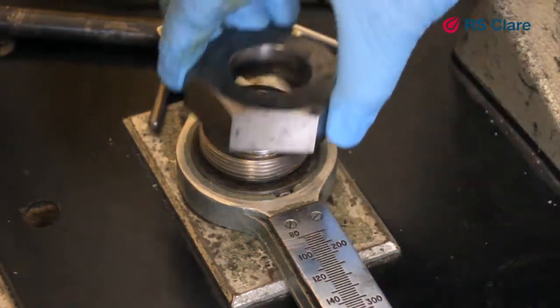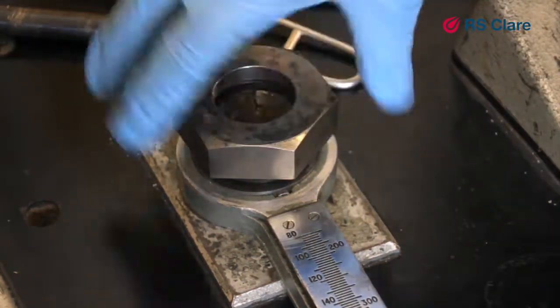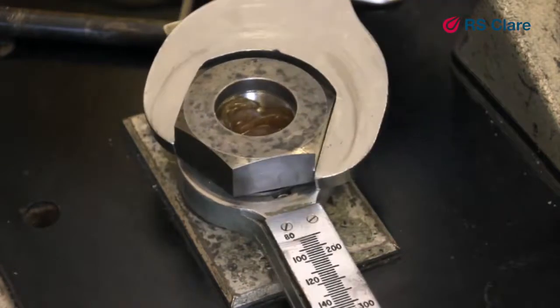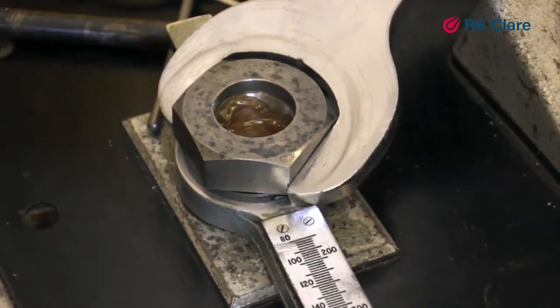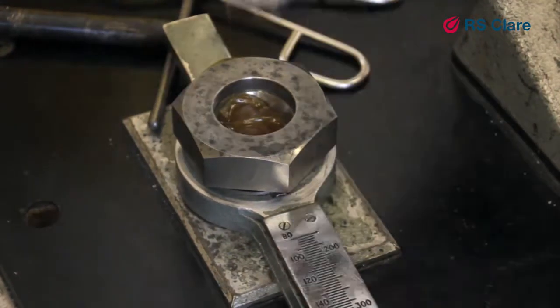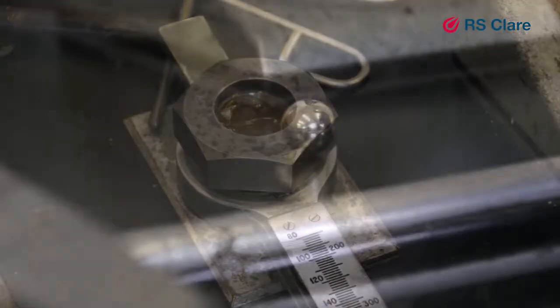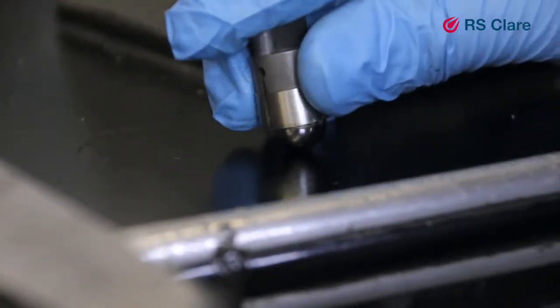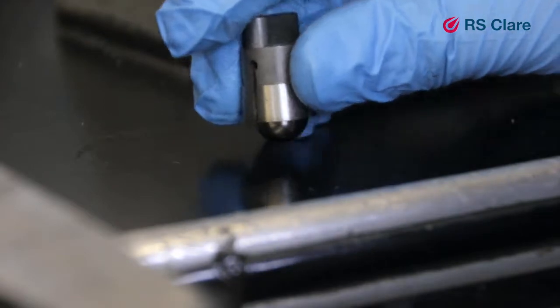A locking ring then securely clamps everything in place. Another ball bearing is inserted into the chuck, which is loaded into the machine.